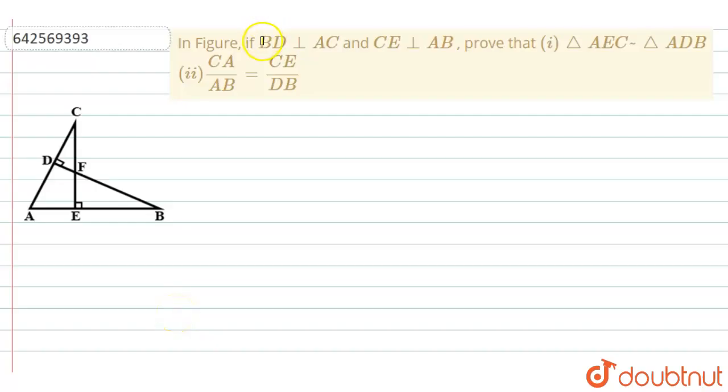The question says that in figure BD is perpendicular to AC and CE is perpendicular to AB. Prove that number 1, triangle AEC is similar to triangle ADB, and number 2, CA by AB is equal to CE by DB.